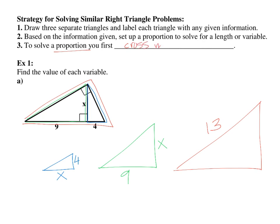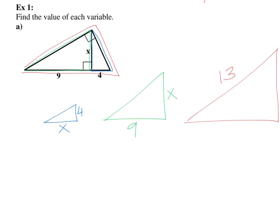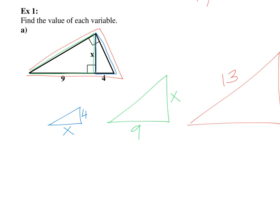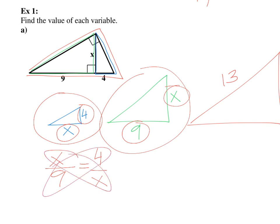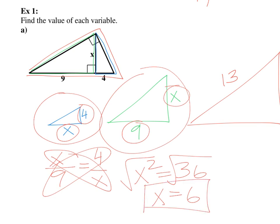Cross multiply to solve the proportion. I know this side corresponds to this side, so I write x over nine. Going from the blue triangle to the green triangle, you want to be consistent with how you set up your ratio. So x over nine equals four over x. Cross multiplying gives x squared equals 36. Taking the square root of both sides, x equals six. Very simple if you understand the idea of similarity.